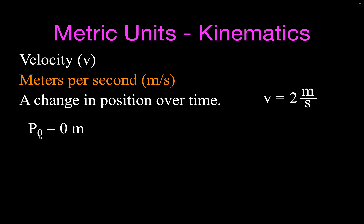So let's say you start at position zero at time zero. If your velocity is two meters per second, then after one second you will have moved two meters, after two seconds four meters, and after three seconds your position will have changed by six meters. Velocity and speed are kind of the same thing, especially if we're going in one direction. But really, velocity is your change in position over time, and that is measured in meters per second.